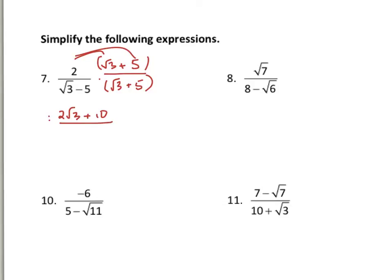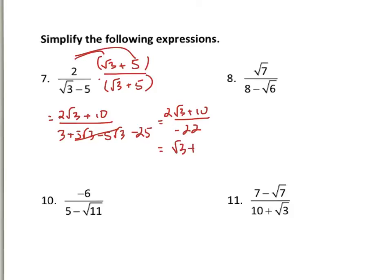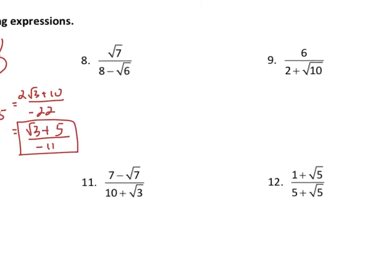Two times root three on top gives two root three, and two times five gives ten. On the bottom you foil: when you multiply any conjugate pair, the inner and outer terms cancel. Root three times root three is three, and the outer and inner terms — five root three and negative five root three — cancel. The last term, negative five times five, is negative twenty-five. So the bottom simplifies to three minus twenty-five, which is negative twenty-two. The top gives two root three plus ten over negative twenty-two. All three terms share a common factor of two, so you divide through: root three plus five over negative eleven.